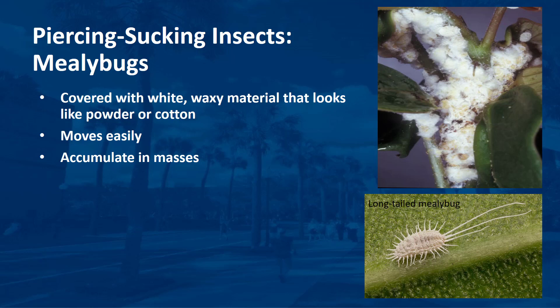Mealybugs are covered in a white, waxy material that looks like powder or cotton. They can easily move around on branches or leaves, and wind may disperse them. Mealybugs accumulate in masses that appear like fluffs of cotton on leaves or branches. These insects can be major pests on many plants in greenhouses and landscapes.